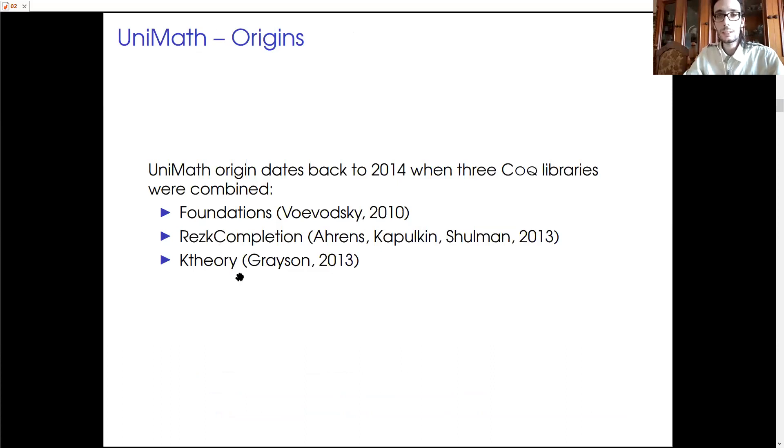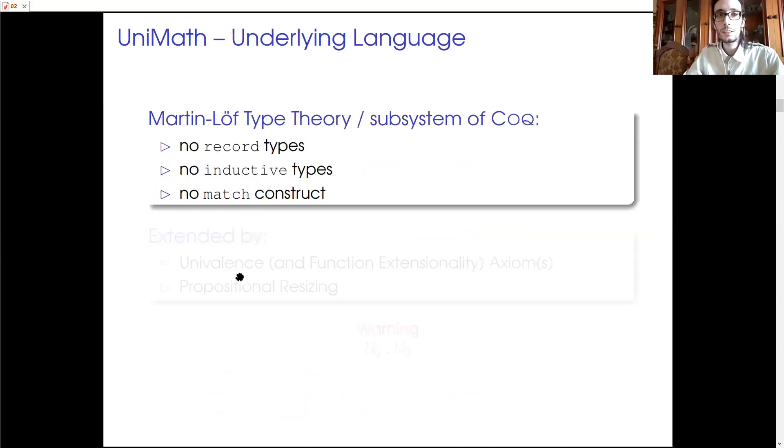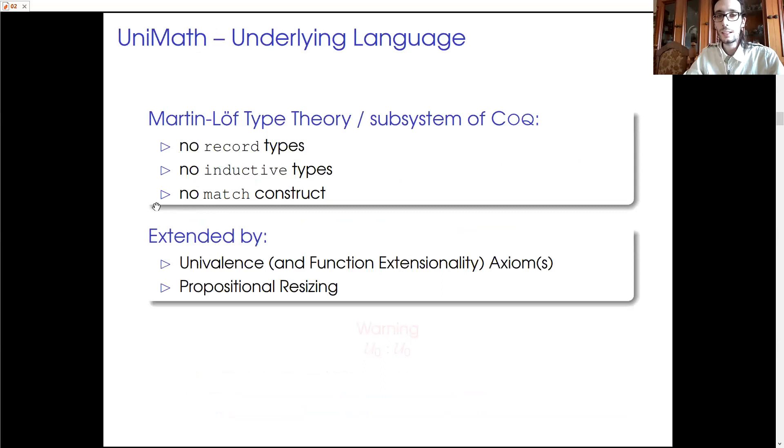From a technical point of view, UniMath is a subsystem of Coq, meaning that we have Martin-Löf type theory plus some optimization. But we do not have record types, nor inductive types, nor match constructor. We have univalence as an axiom and we have propositional resizing to handle truncation.